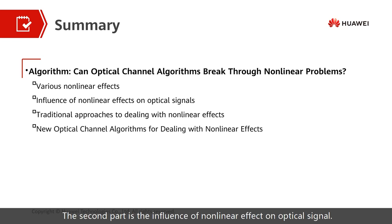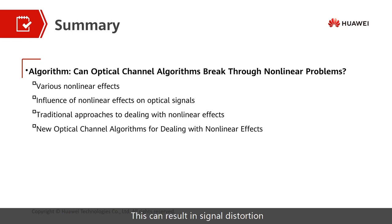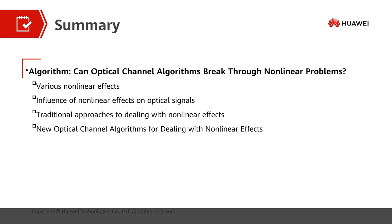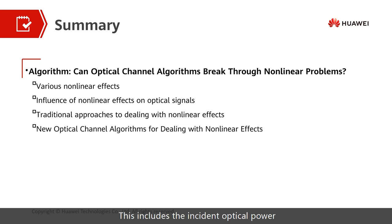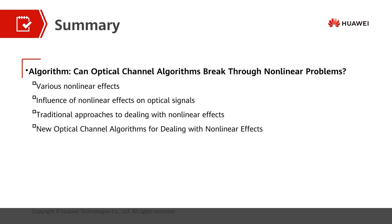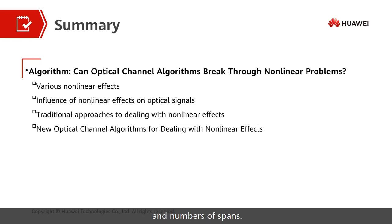Non-linear effects mainly cause transmission damage to the system, resulting in signal distortion and limiting the transmission performance. The factors that influence non-linear effects include: incident optical power, spectrum width of the optical signal, modulation pattern characteristics, fiber dispersion coefficient, optical channel algorithm, and number of spans.